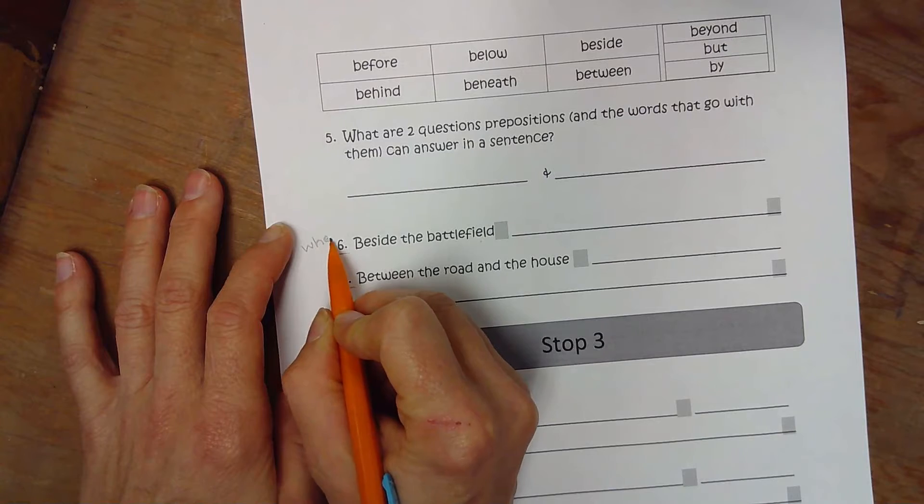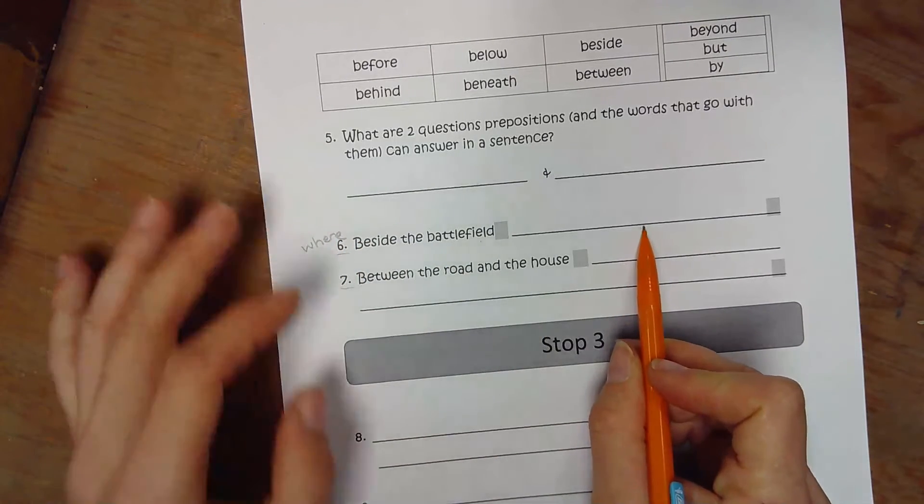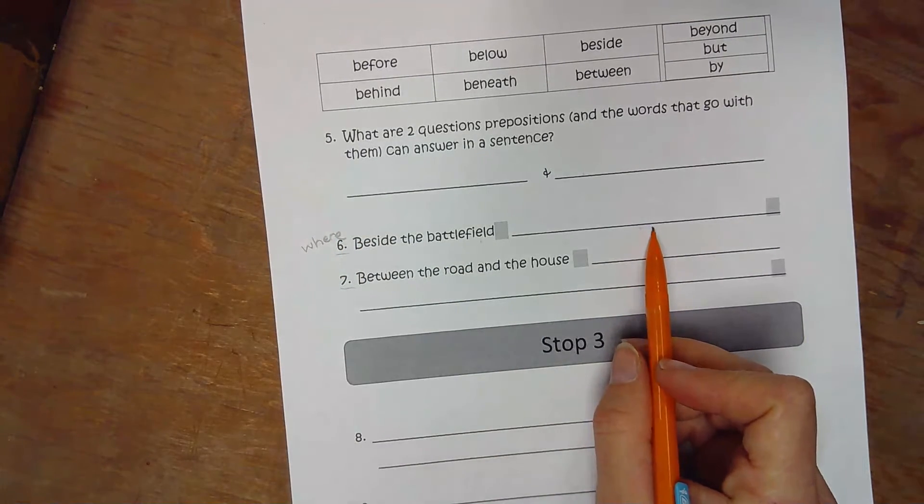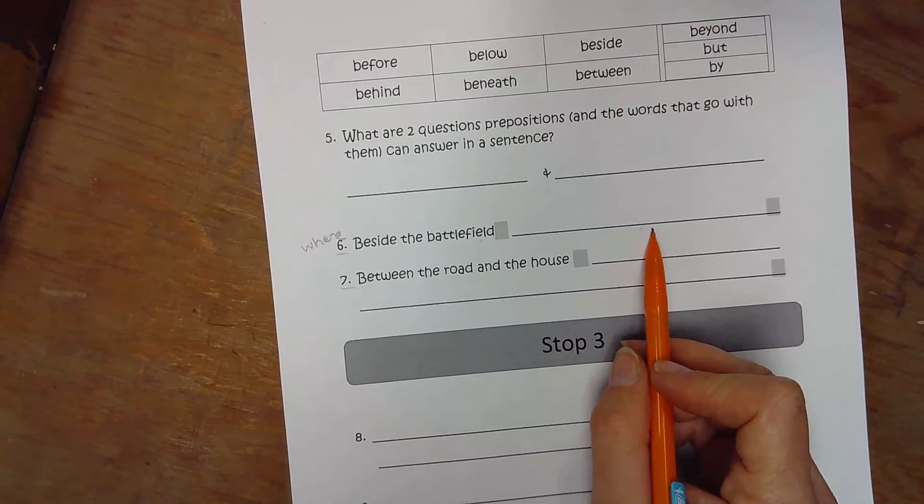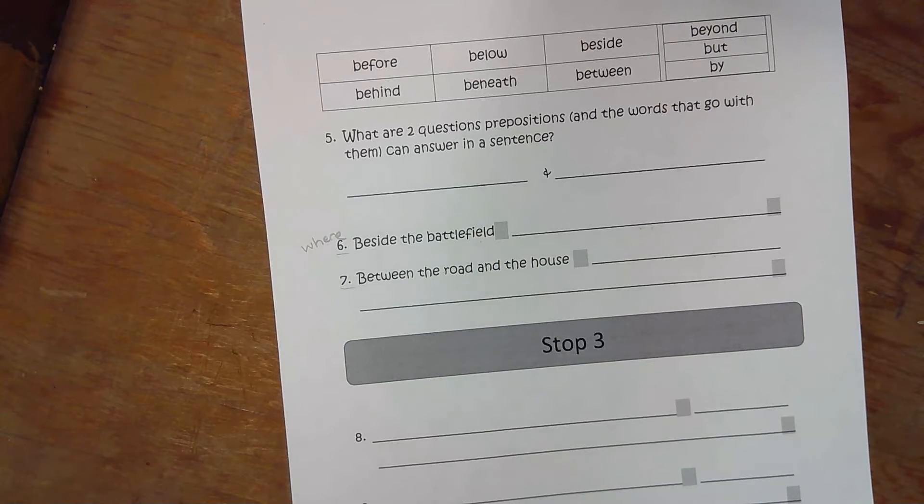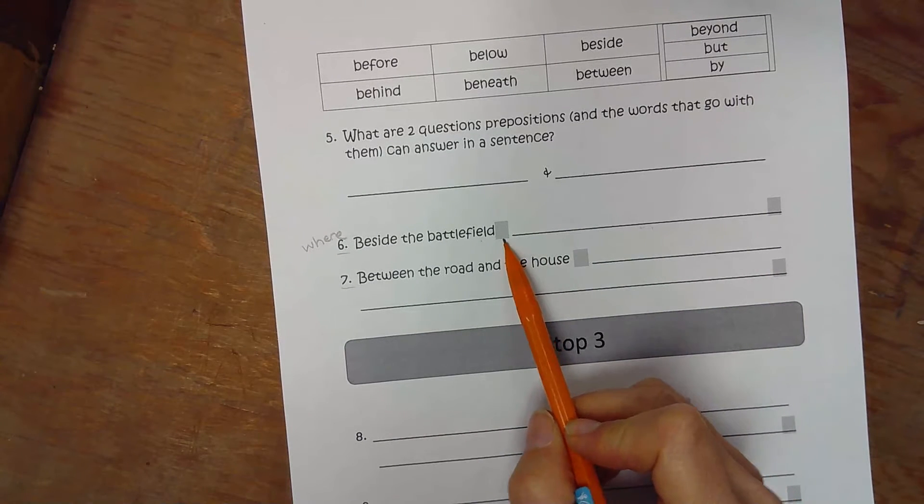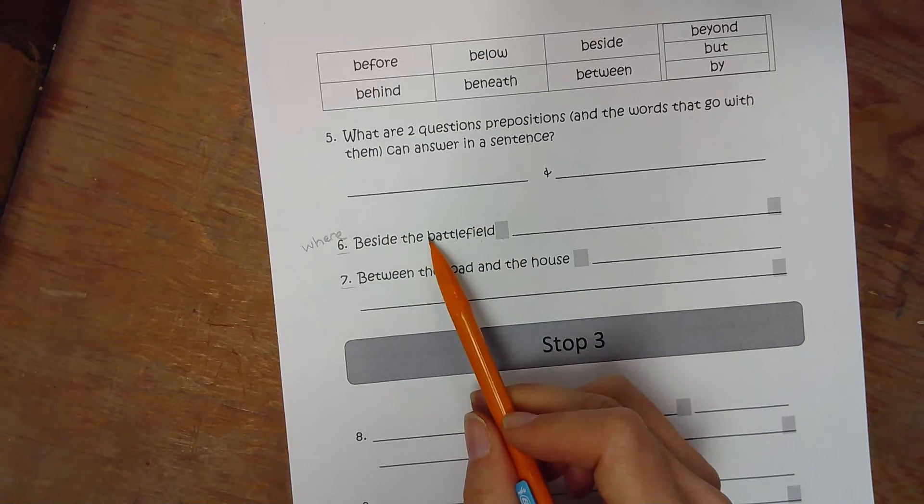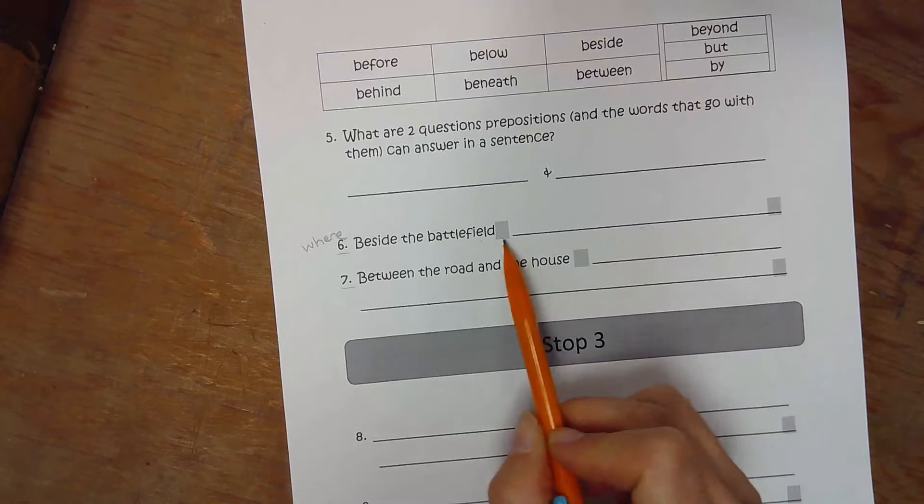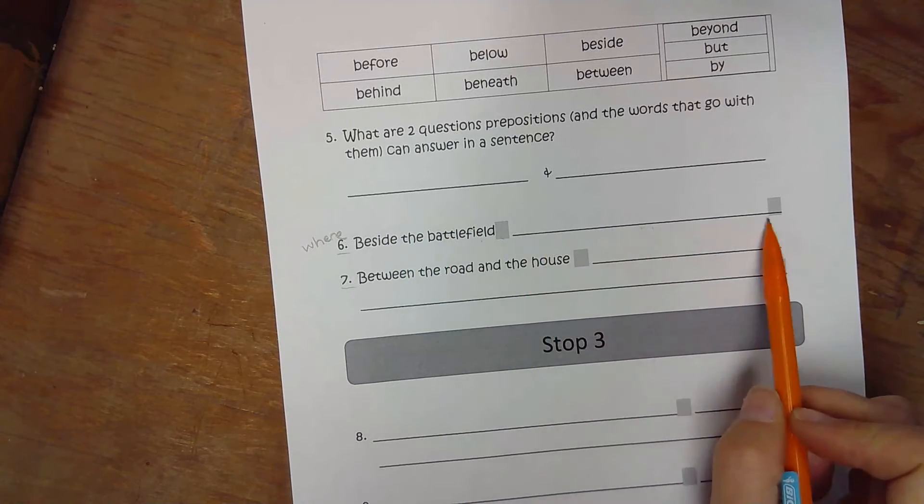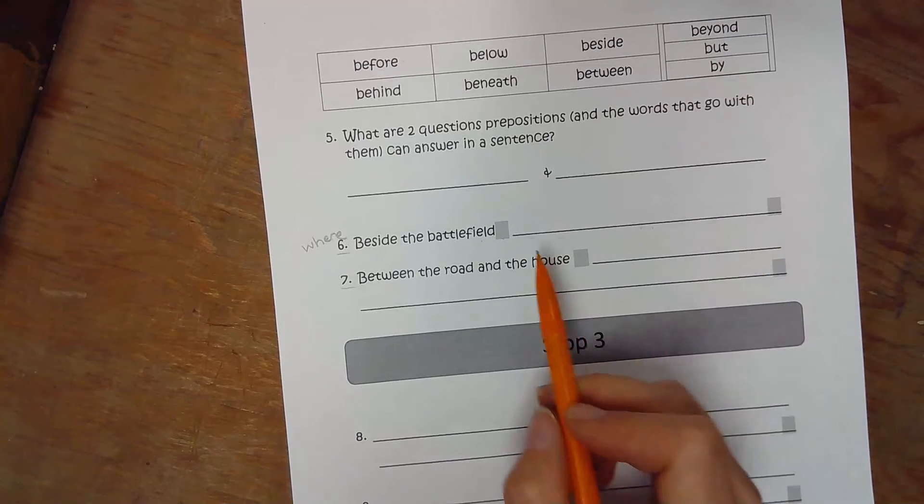The rest of the sentence has to tell what action there was beside the battlefield. So you have to decide, beside the battlefield, do something to show that you could cut off this part of the sentence and the rest of it makes sense. This part here must be a complete sentence that could stand on its own.